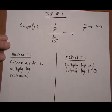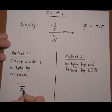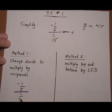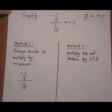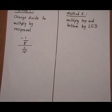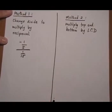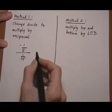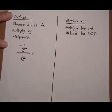Alright, so method 1. Change the fraction to division and make it multiply by the reciprocal. We have minus 1 5th divided by 1 15th.